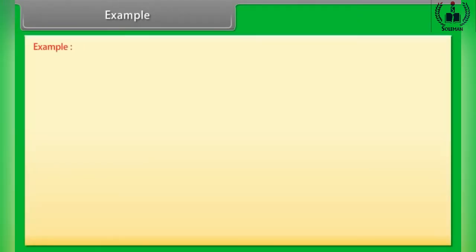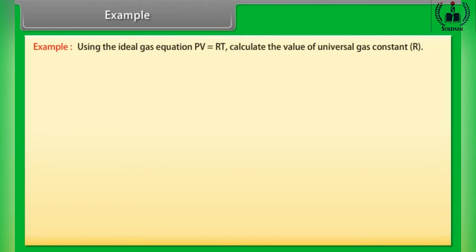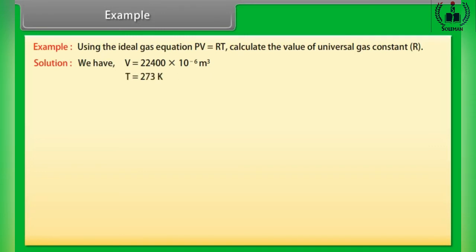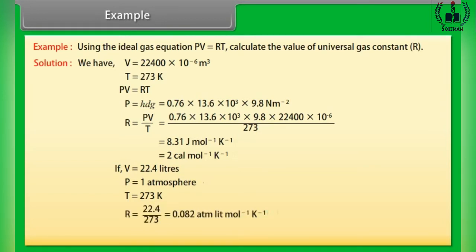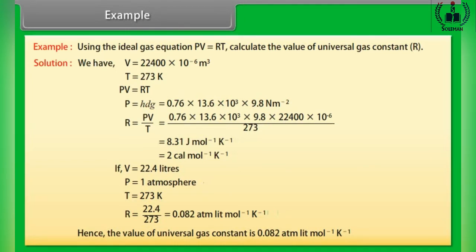Example. Using the ideal gas equation PV = RT, calculate the value of the universal gas constant. Solution: V = 22,400 × 10⁻⁶ m³, T = 273 K. Using R = PV/T, R equals approximately 2 cal per mole per Kelvin. If V = 22.4 litres, P = 1 atmosphere, T = 273 K, then R = 0.082 atm·litre per mole per Kelvin. Hence, the value of the universal gas constant is 0.082 atm·litre per mole per Kelvin.